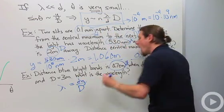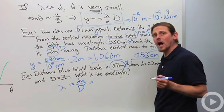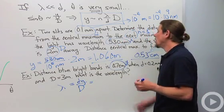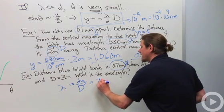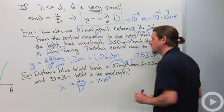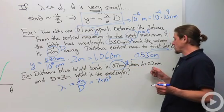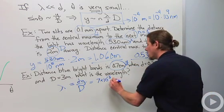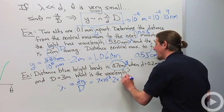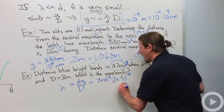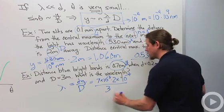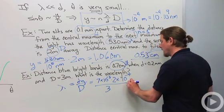Again, I want to do everything in SI units, so I'll change this 0.7 centimeters to 7×10^-3, that's y. I'll change this 0.2 millimeters to 2×10^-4, so that's my d. And then I'll divide by capital D, which is 3, and this will be in meters.